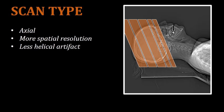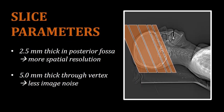What kind of slice parameters should we use? This varies between institutions. At many places, they will use thinner slices through the posterior fossa and thicker slices through the vertex. The thin slices through the base of the skull are often performed with 2.5 millimeter thickness. These thinner slices allow for increased spatial resolution. 5 millimeter slices are completed through the vertex.